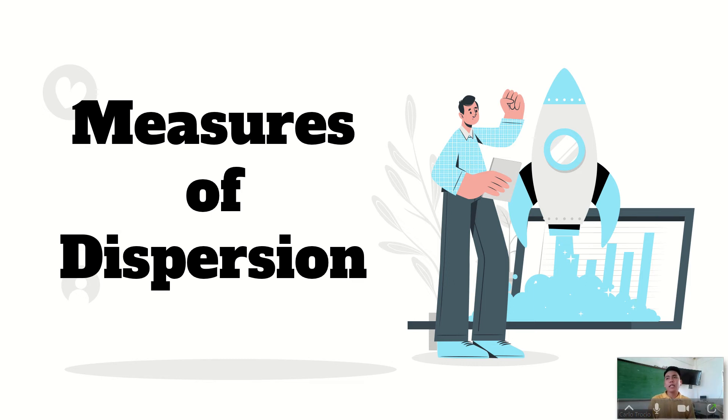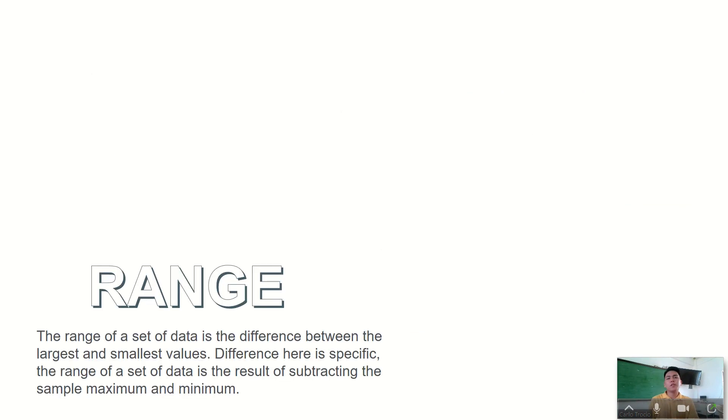Because again, data can have higher and lower values, can be maybe in the average, or maybe spread out, or not that spread out. So that is measures of dispersion.